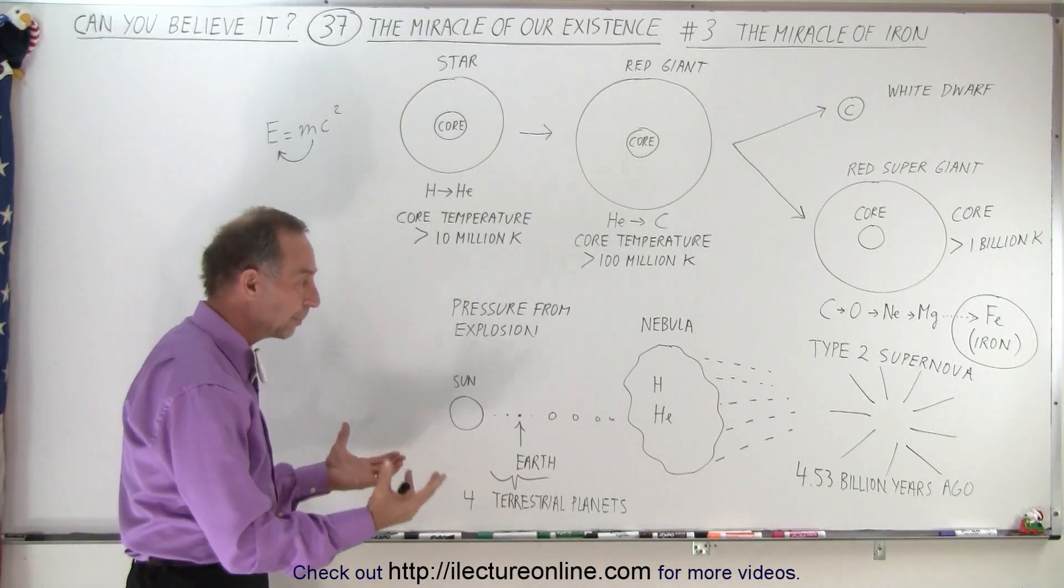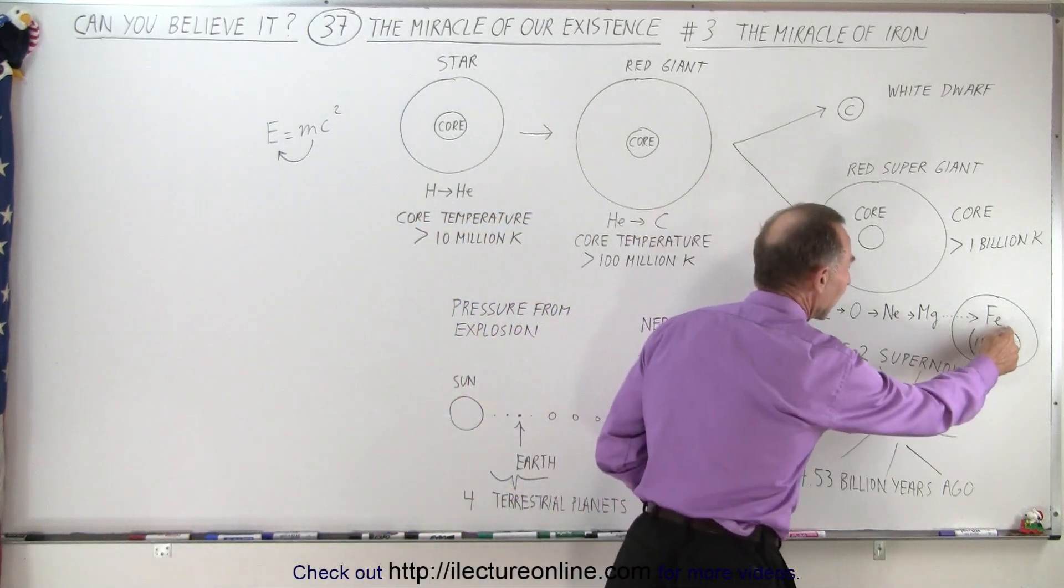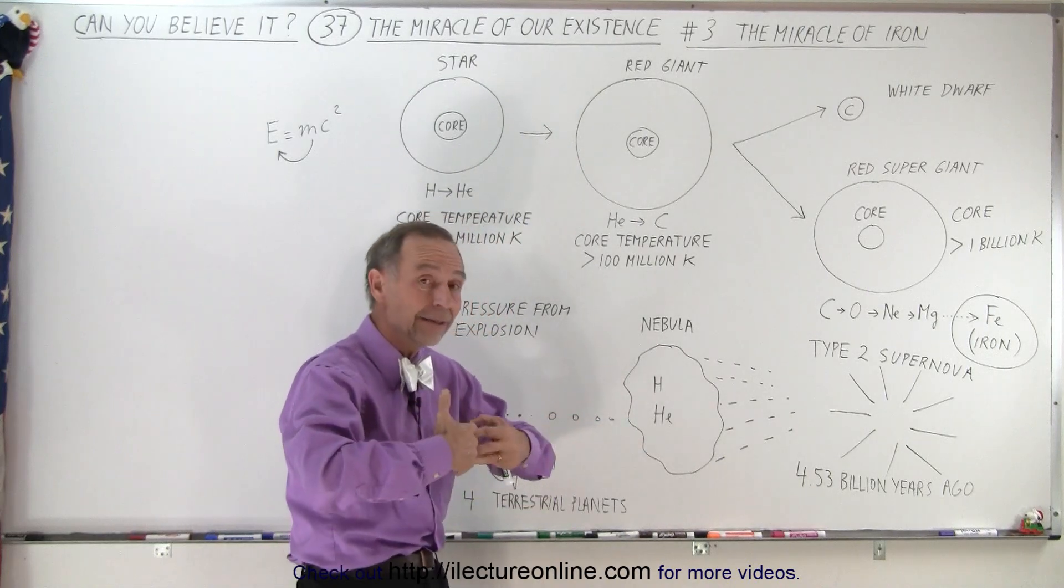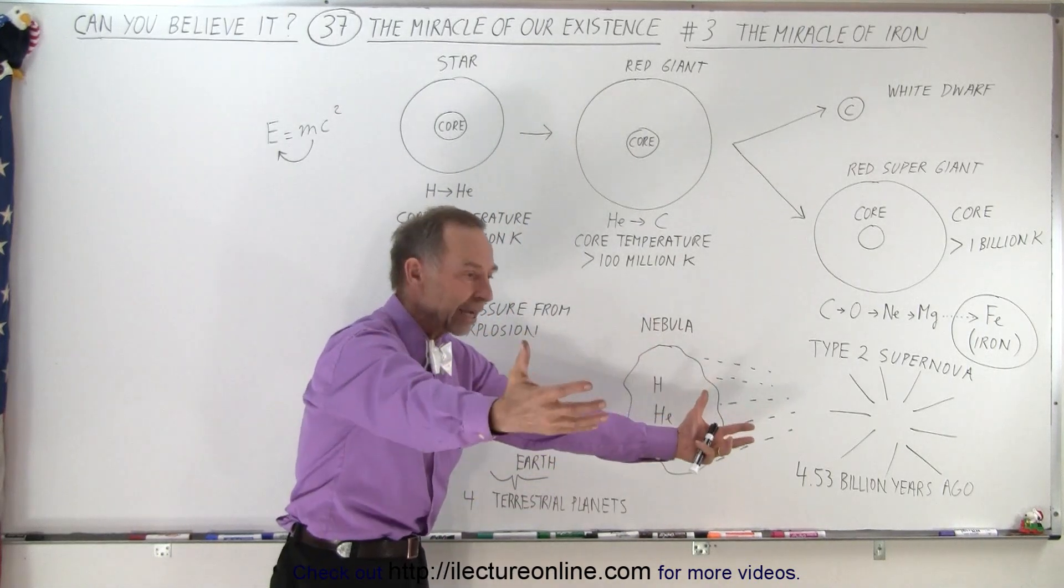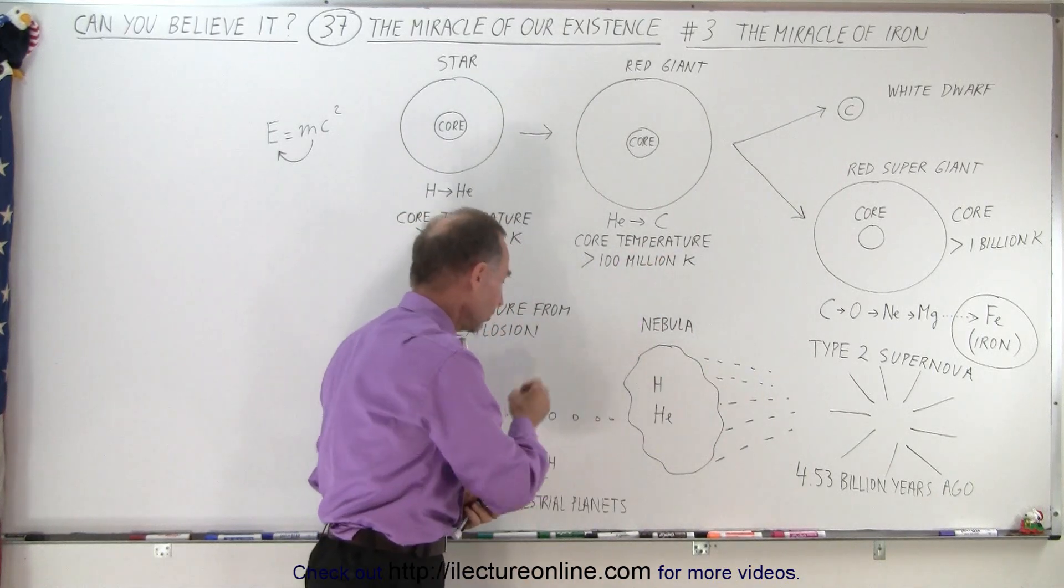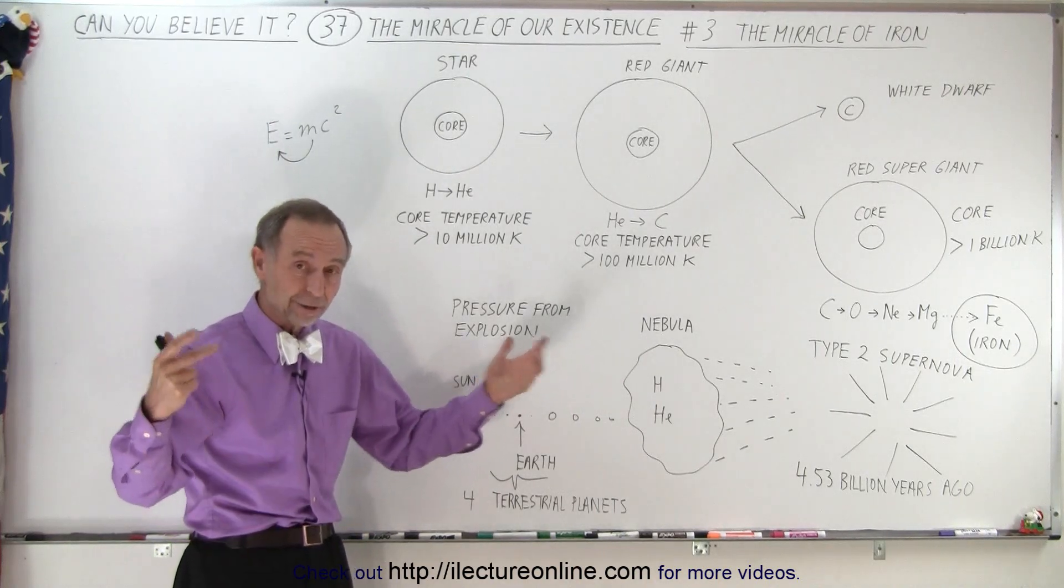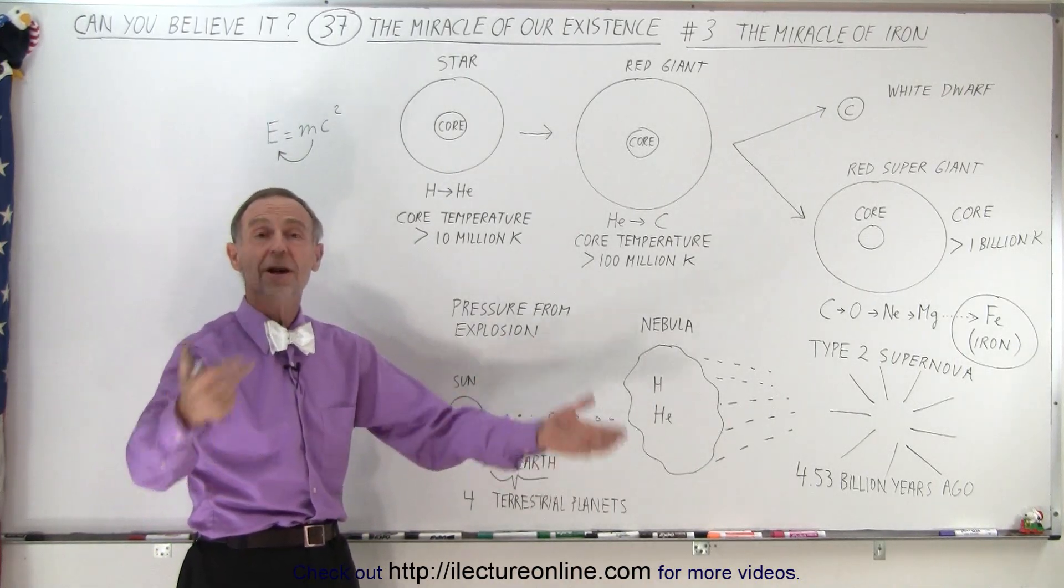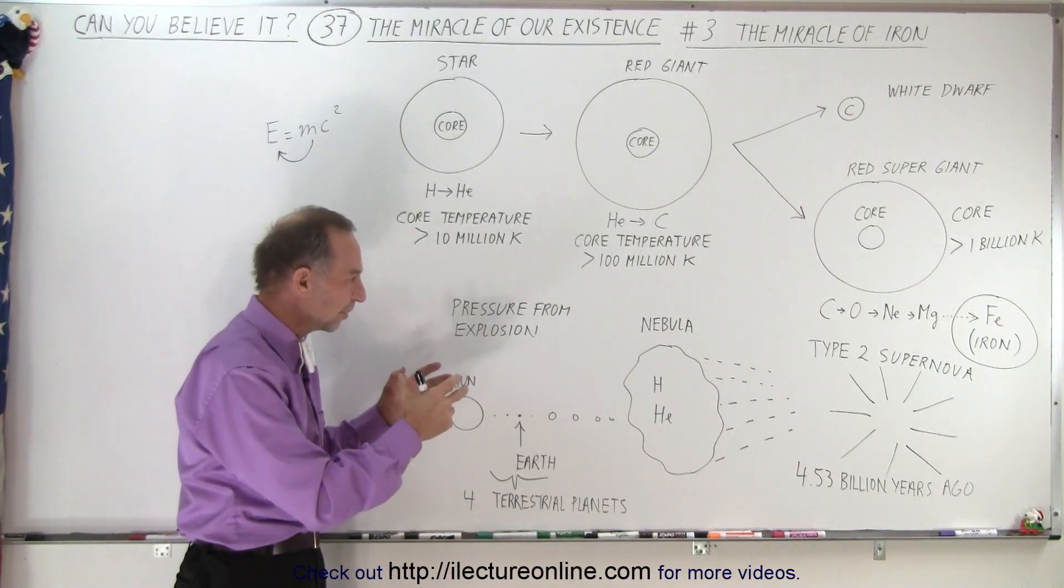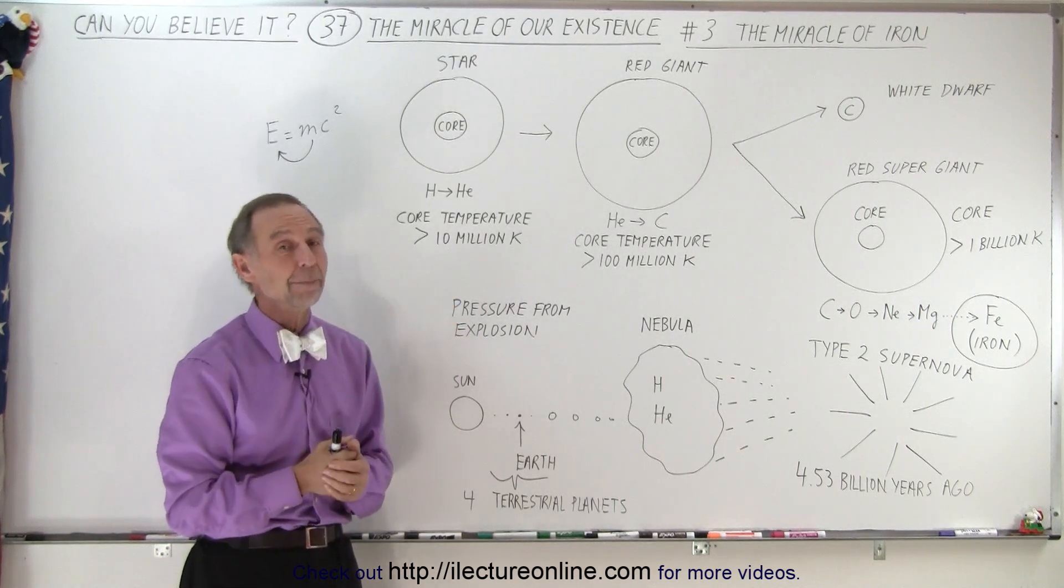If that explosion hadn't happened, we wouldn't be here. And that explosion could only happen because iron has this unique property that if you try to fuse iron into the next heavy element, instead of giving off energy, it actually absorbs energy out of the core. And that unique property allowed us to exist. That's food for thought. If it wasn't for iron doing that, we wouldn't be here talking about it. The miracle of life, the miracle of us in the Earth existing, in part, depends upon the property of iron.